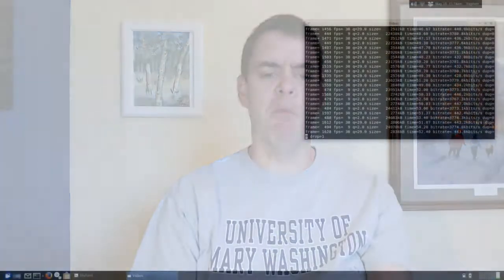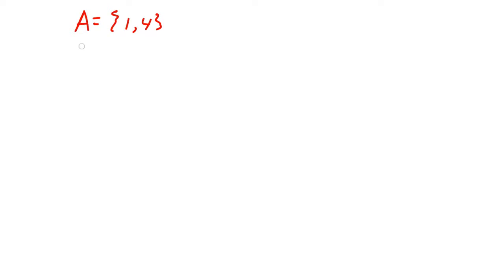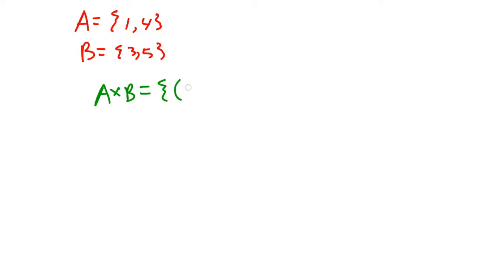A relation between sets A and B is a subset of A cross B — a subset of the Cartesian product between A and B. Let's unpack that and recall what all this means. If I have two sets, A and B, and put some elements in them, you'll recall that A cross B does not consist of numbers — it consists of ordered pairs of numbers. The Cartesian product is a set of ordered pairs, where each pair combines one element from the left-hand side and one from the right-hand side.